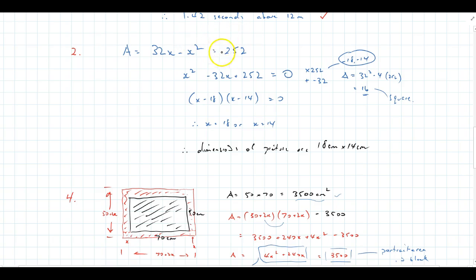We take x squared across, becomes x squared, take 32x, so that becomes minus 32x. Everything's been taken to the right, plus 252 equals 0.